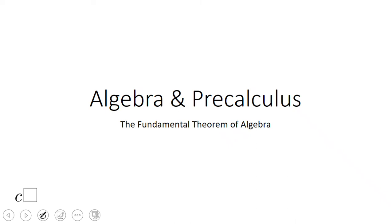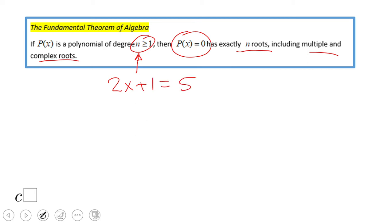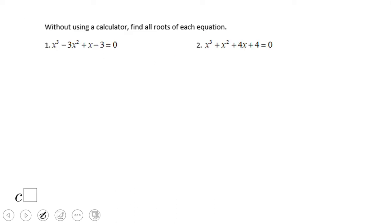Welcome, or welcome back, on C-Square. In this video clip we're going to talk about the Fundamental Theorem of Algebra. If we have a polynomial of degree n, we have exactly n roots, including multiple and complex roots. So if you have a linear equation, degree 1, you have one solution; if you have a quadratic, degree 2, you have two solutions, including multiple and complex solutions.